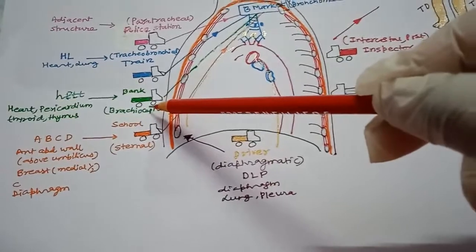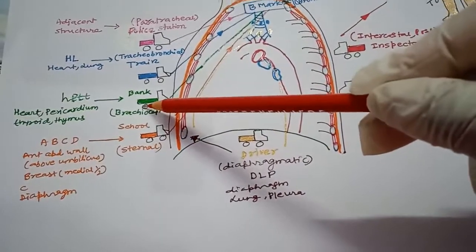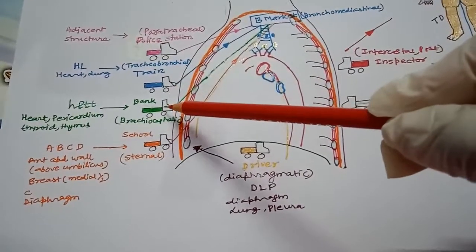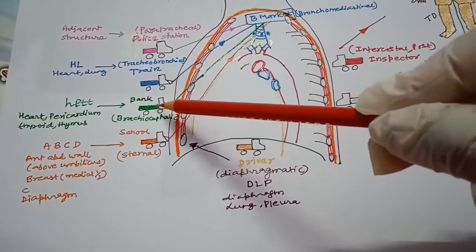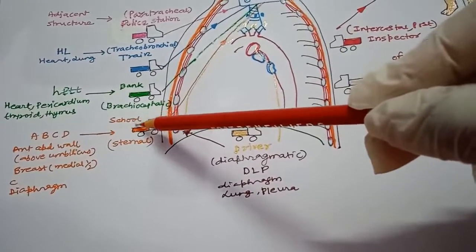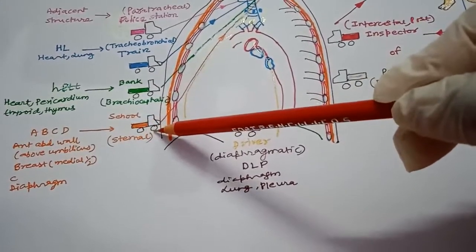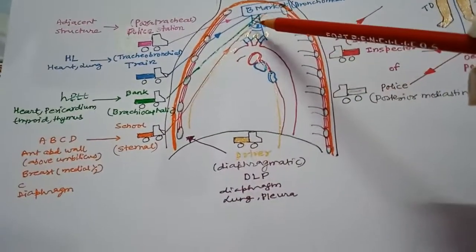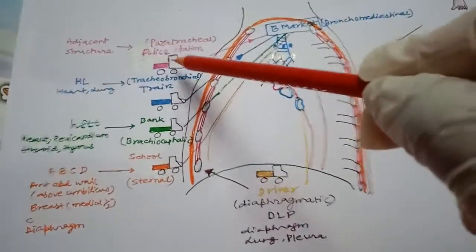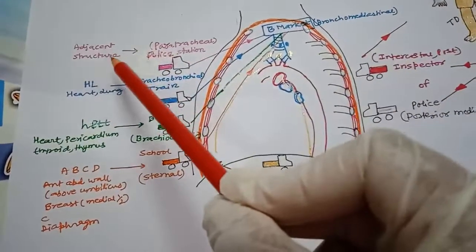The third garbage truck, coming from the bank or brachiocephalic trunk, represents the brachiocephalic lymph node, which lies along the brachiocephalic vein — left or right. The fourth garbage truck collects garbage from school, representing the external or para-external lymph node, and goes to the secondary channel.